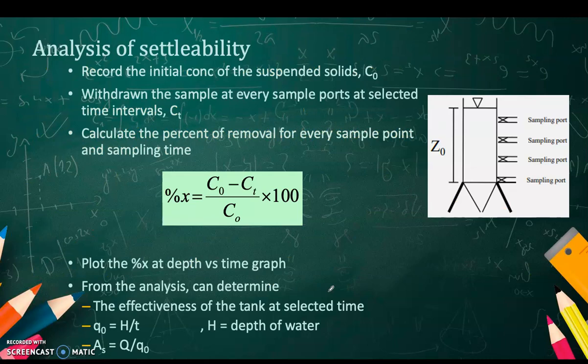This is the analysis of settle-ability. If using Stokes law, you take from the bottom in type 1, but in type 2 you take at every part of the column, at every height, at determined interval heights.